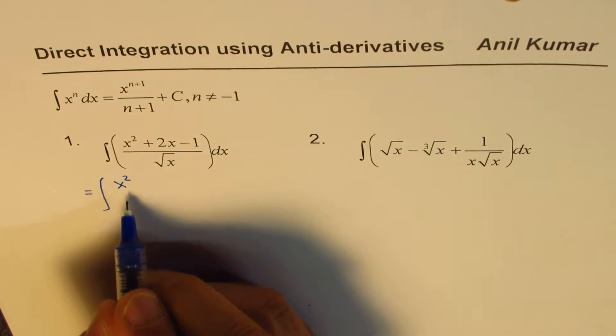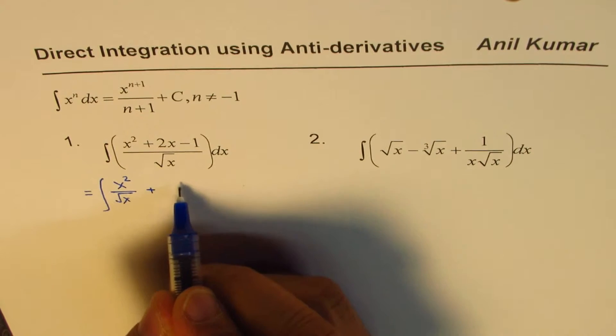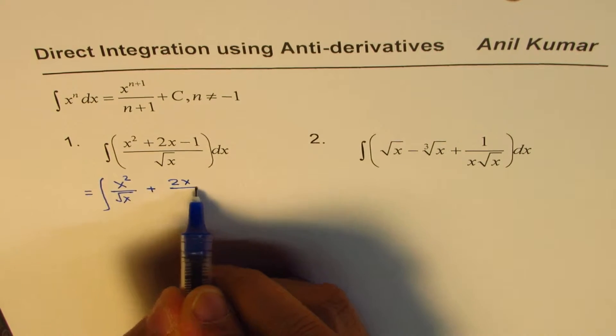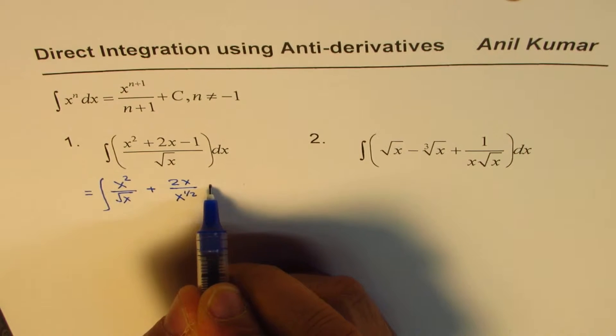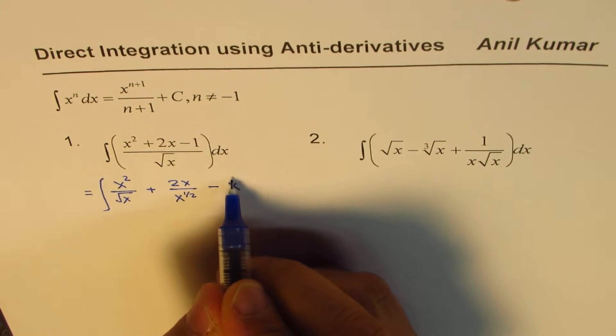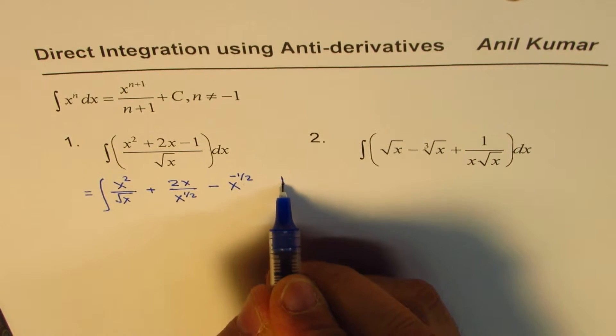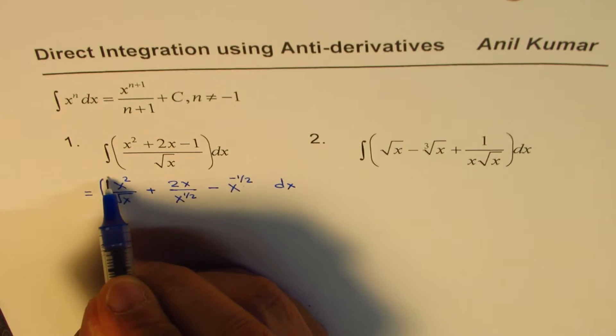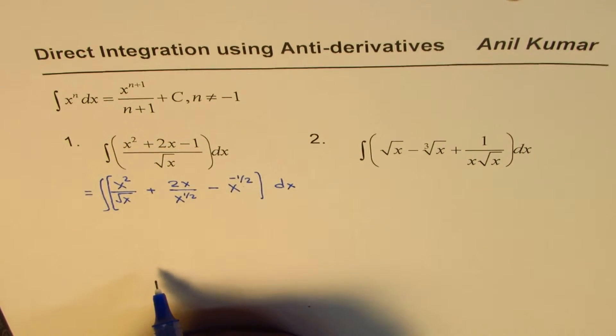So you could write this as x squared over square root of x. And so all is better to write them as rational powers. You could write this as, for example, 2x over x to the power of half if you want to. Minus, you could also write this as x to the power of minus half. So I'm just writing in different ways, and then this is d of x. So normally you put a bracket around this, so dx is applicable to all.